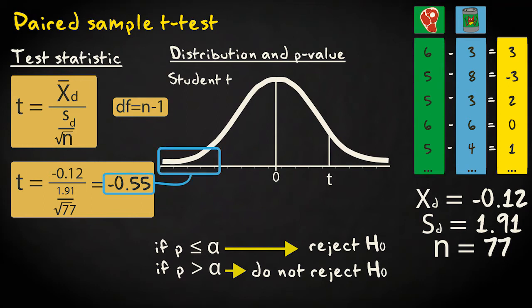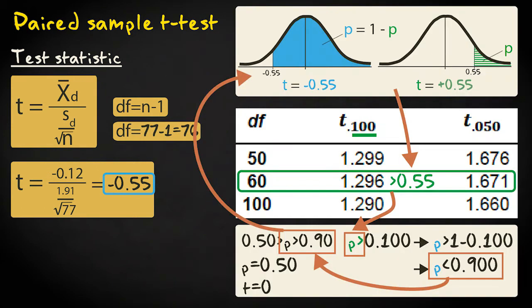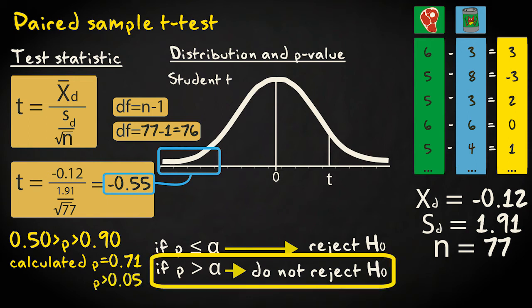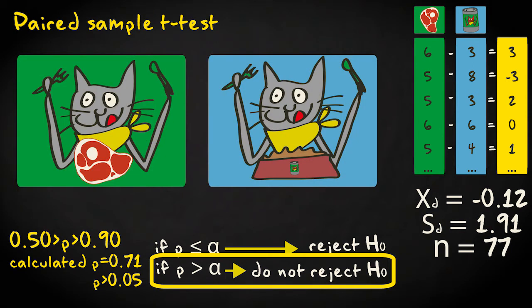Unexpectedly, the value is negative and falls in the left tail. The degrees of freedom are 76. Using a table, the p-value lies somewhere between 0.50 and 0.90; calculated with statistical software, it is 0.71. This is much larger than the significance level of 0.05, so I can't reject the null hypothesis. I can't conclude that the mean health score in the population is higher for cats fed on raw meat compared with cats fed on canned food.